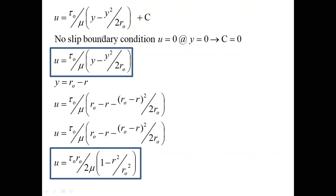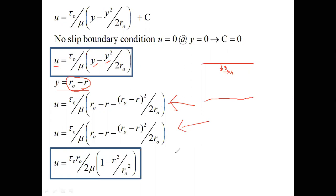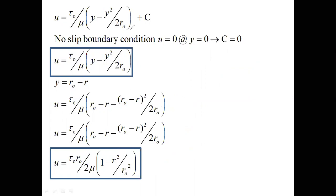We get u equals (tau-naught over mu) times (y minus y² over 2r-naught) plus zero. Here u is the velocity at distance y from the pipe wall. Since y equals r-naught minus r, substituting and simplifying, we obtain the velocity profile equation in terms of r from the pipe axis.